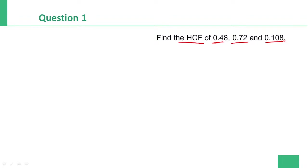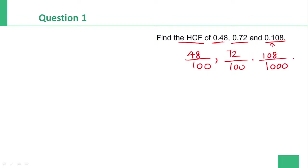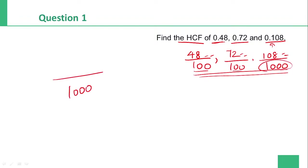First question: find the HCF of 0.48, 0.72, and 0.108. So 0.48 has 2 decimal places, write it as 48/100. Similarly 0.72 is 72/100, and 0.108 has 3 decimal places so it is 108/1000. Now applying HCF of fractions: take HCF of numerators and LCM of denominators. LCM of 100 and 1000 is obviously 1000. So now find HCF of 48, 72, and 108.